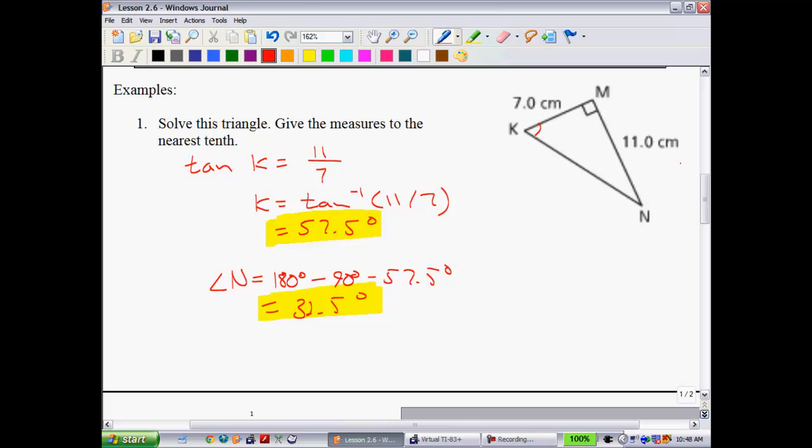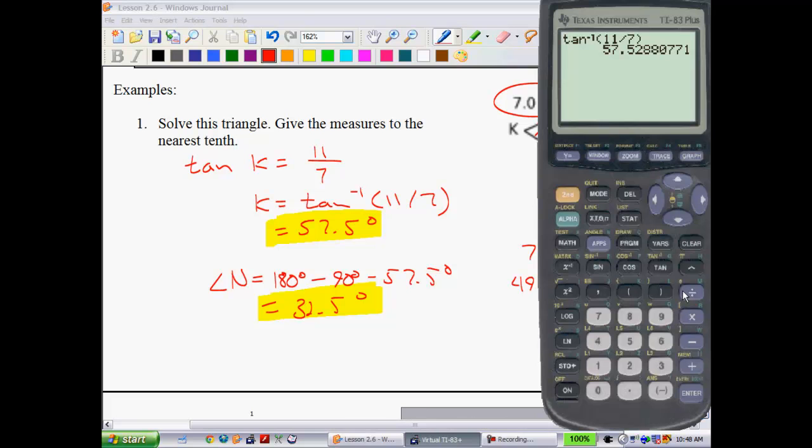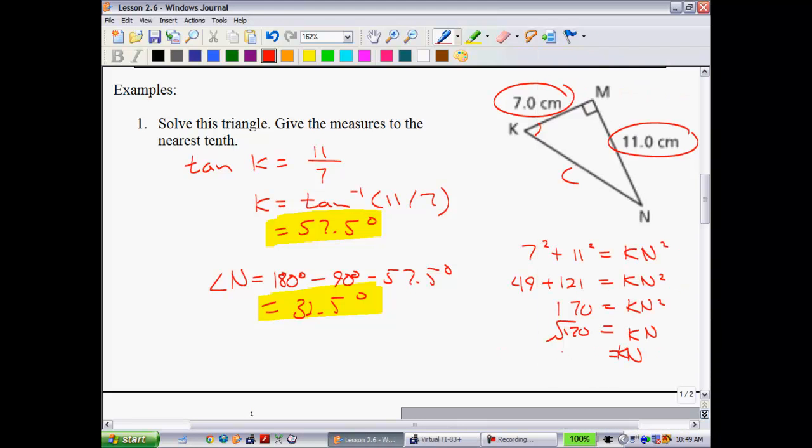So, so far now, since it's solve the triangle, I've found two out of the three things that I need to. Now, the last one I need to do is KN. Since you have the angles, you could use trigonometry. I'm just, for something different here, I'm going to use Pythagoras. So, that being my A, B, and then this side being my C, I'll have 7 squared plus 11 squared is equal to KN squared, 49 plus 121 is equal to KN squared. That gives me 170. And that means KN is equal to the square root of 170, which is to one decimal place, 13.0 centimeters.